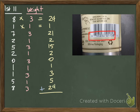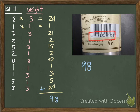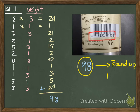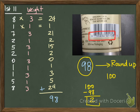Now I add all of those up and get 98. The check digit should be the number it takes to get from 98 up to the next multiple of 10, which is 100. So 100 minus 98 equals 2 — that's what the check digit should be. Looking at the barcode, the check digit is indeed a 2, so it's valid.